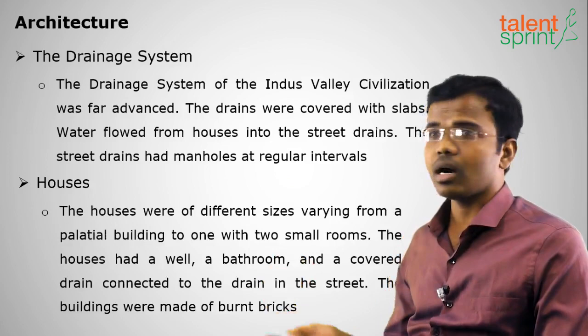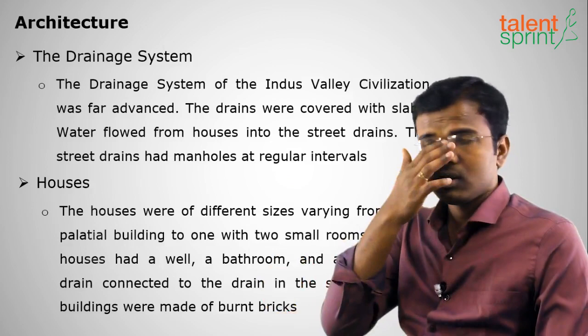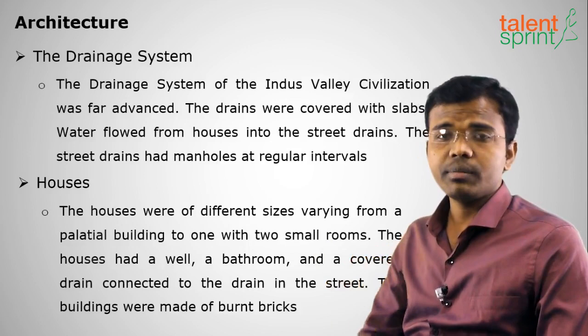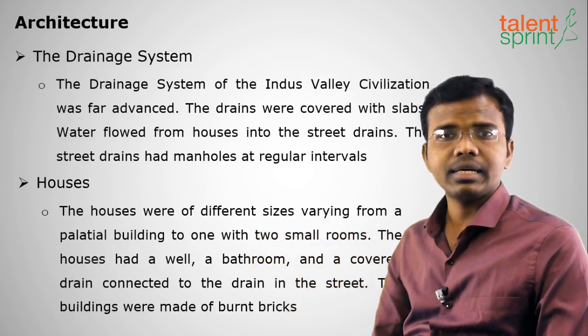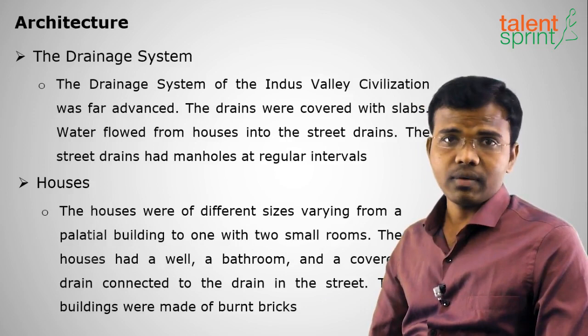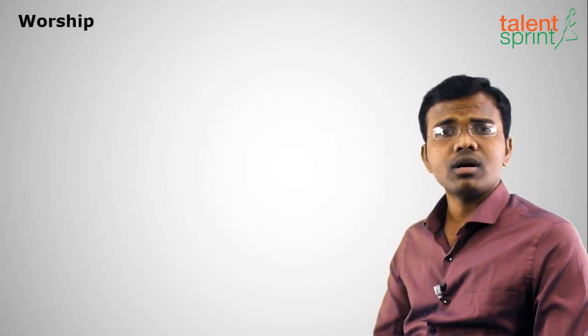Most of the houses were made of burnt bricks, as we can see at Mohenjo-daro. They were well-placed in a grid, all at right angles — 90 degrees — to each other. This is a very significant feature of Indus Valley people.